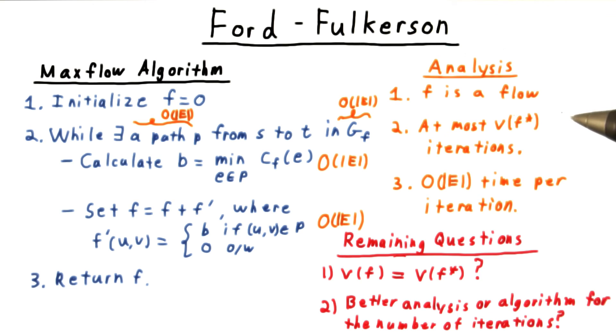Also, this bound on the number of iterations is potentially exponential in the size of the input, leaving us with an exponential algorithm. Perhaps there's some way to improve either the analysis or the algorithm to get a better running time. These two questions will occupy the remainder of the lesson. We'll start by showing that Ford-Fulkerson does indeed produce a maximum flow. And then we'll see about improving its running time.